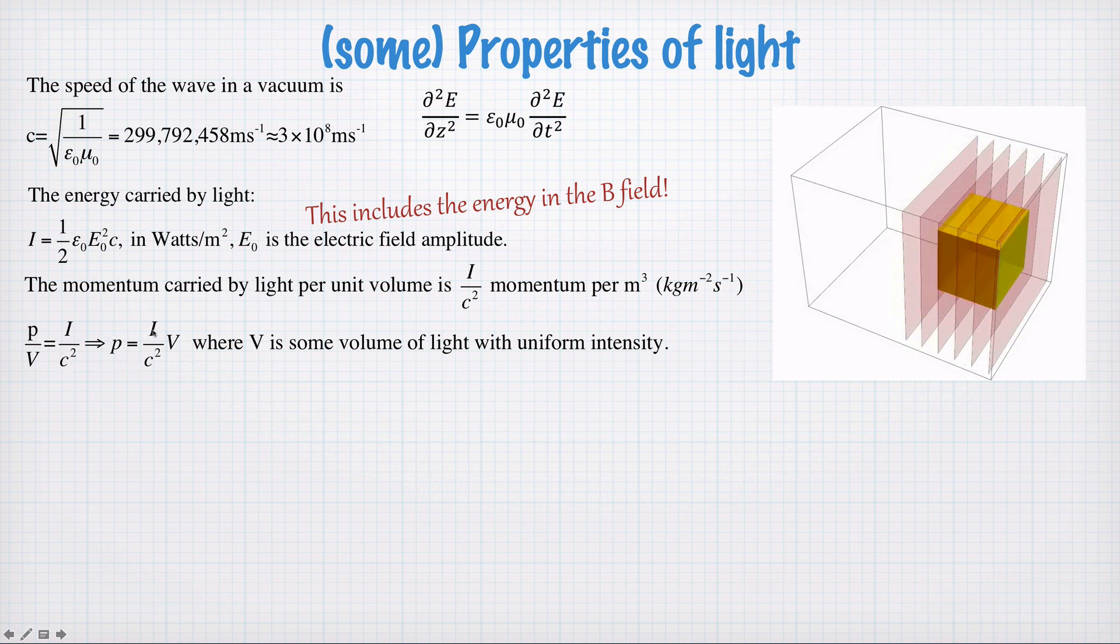So the momentum inside that volume is the intensity divided by c squared multiplied by the volume of our box. And this is in the case where we're considering light of uniform intensity, so plane waves.